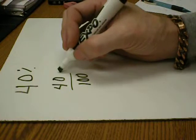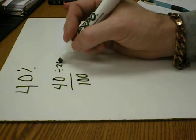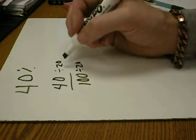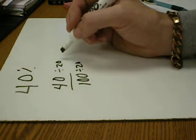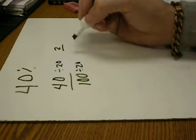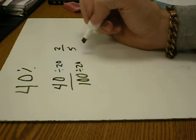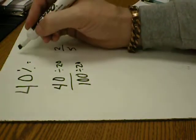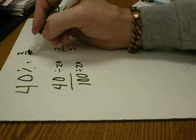In the simplest form, you have to find the greatest common factor. In this case, it would actually be 20. So 40 divided by 20 would actually be 2. 100 divided by 20 would actually be 5. So 40% as a fraction in the simplest form would equal 2 over 5.